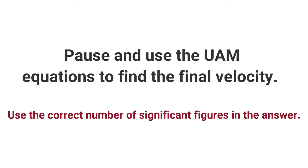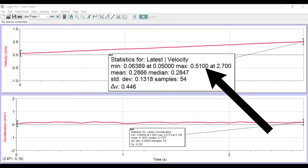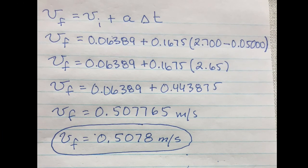And now pause the video and find the final velocity. As you can see, when I unblock the numbers, our final velocity is 0.5100. And here's how you calculated it.